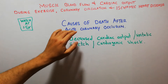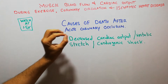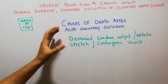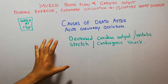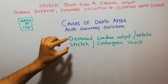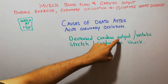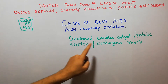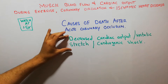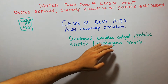Now we are going to talk about causes of death after acute coronary occlusion. We discussed in detail in our last lecture the acute coronary occlusion, or acute myocardial infarction, or heart attack. The first cause we are going to discuss today is decreased cardiac output, which is due to systolic stretch and cardiogenic shock.